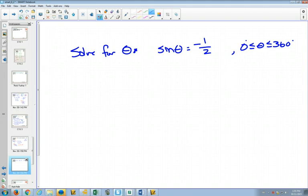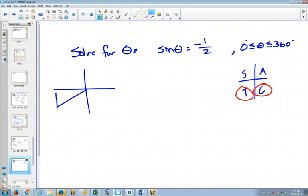Now sine is negative. So step 1, we think about the CAST rule. Where is sine negative? Which quadrants? 3 and 4. Because sine is positive in 1 and 2. So sine is negative in 3 and 4. And if we drew a picture for this in quadrant 3, opposite over hypotenuse. Here's our reference angle. And one in quadrant 4. Reference angle's still there. Opposite over hypotenuse is 1 over 2.